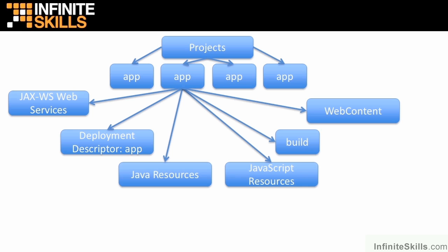We also have our Java resources folder — we'll come back to that in a moment. There's a JavaScript resources folder where we might put JavaScript things, and a Build folder where we might put some JARs or manually configure a build path. Web content, of course, is going to be our main project directory for our views, HTML files, and things like that. We'll see that in a moment as well.